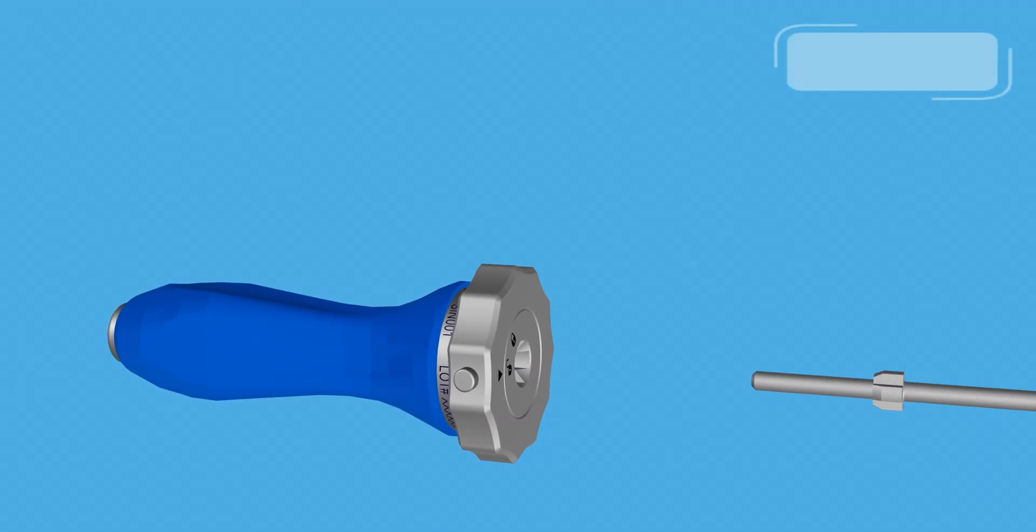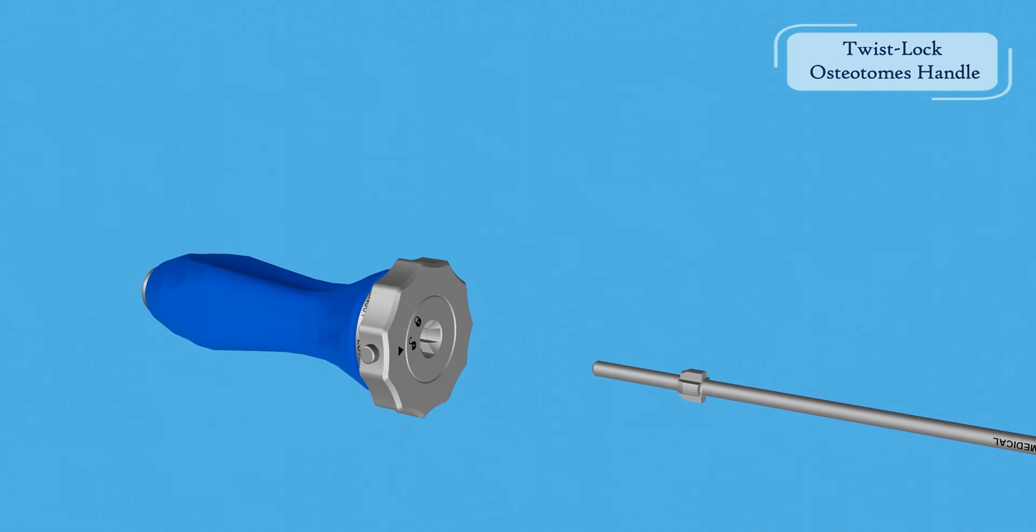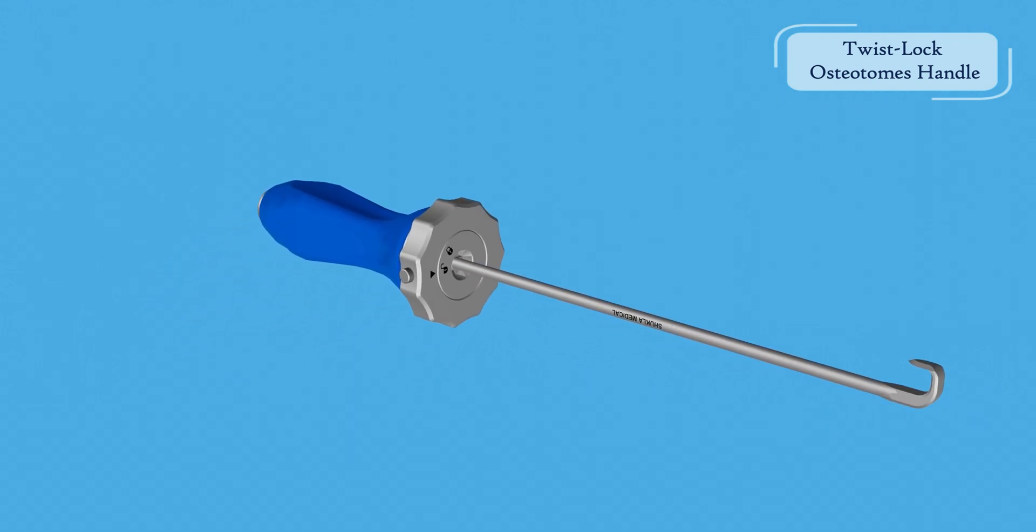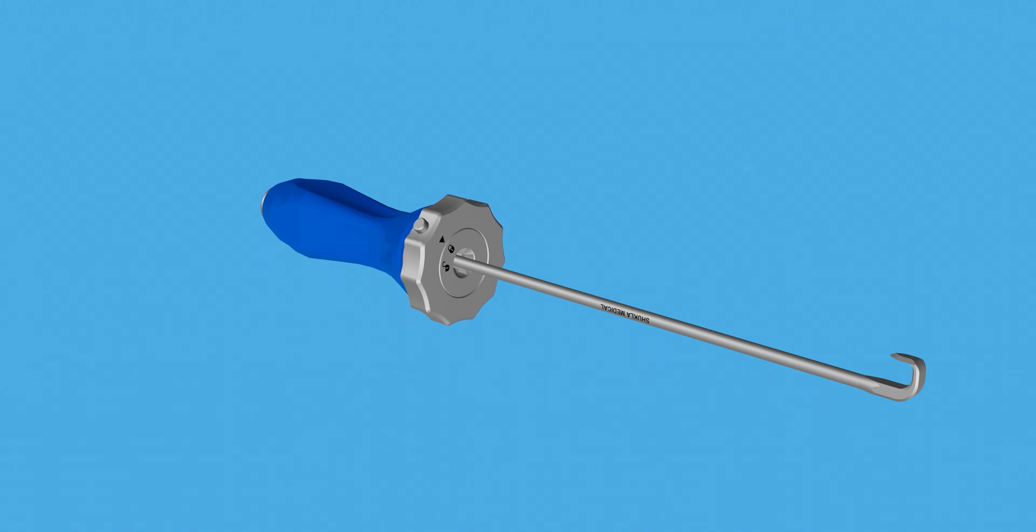The osteotome handle and blade assembly features strike plates on both ends for tapping blades in or out. There is a locking button to keep the blade secure and an ergonomic handle to reduce slippage and surgeon hand fatigue.